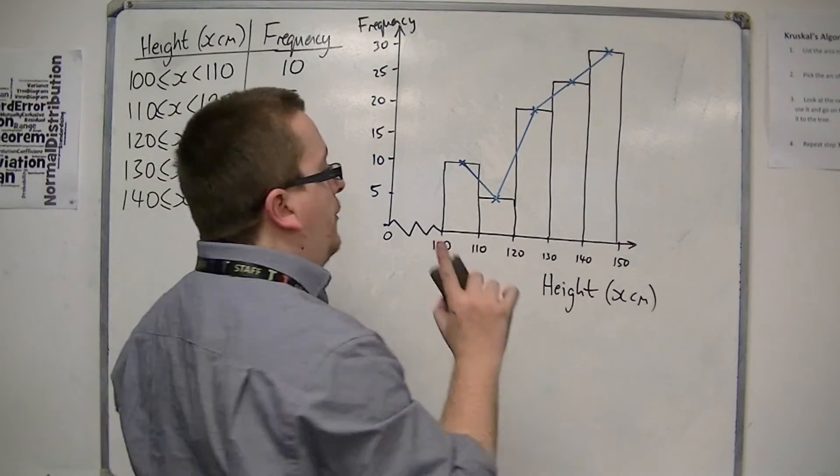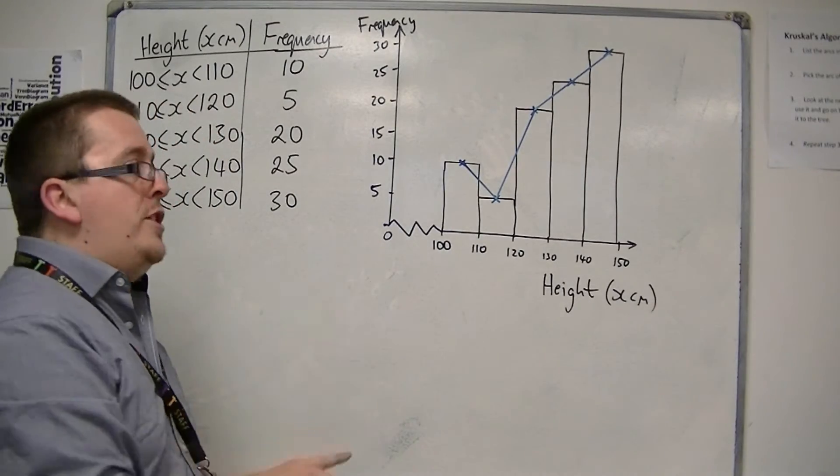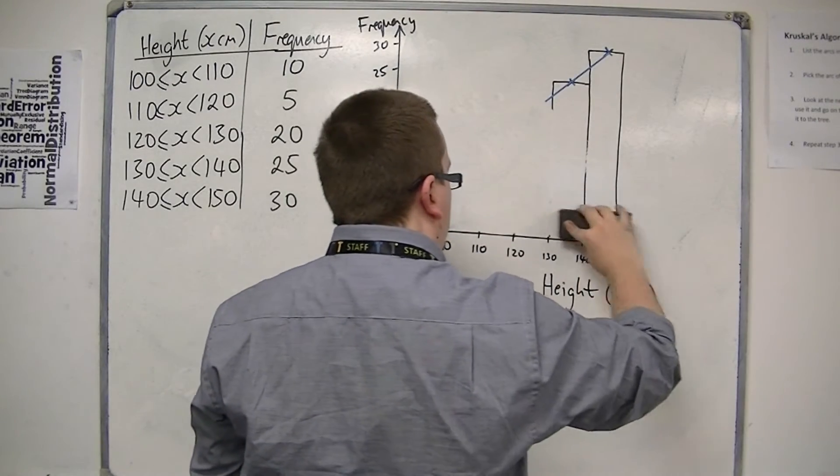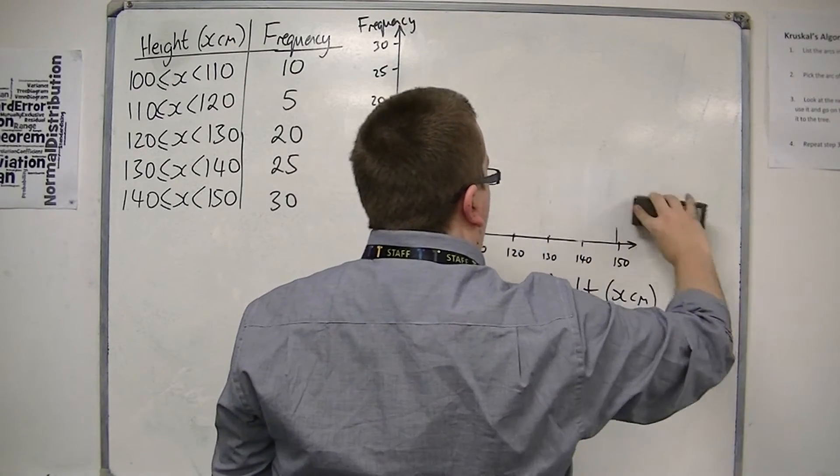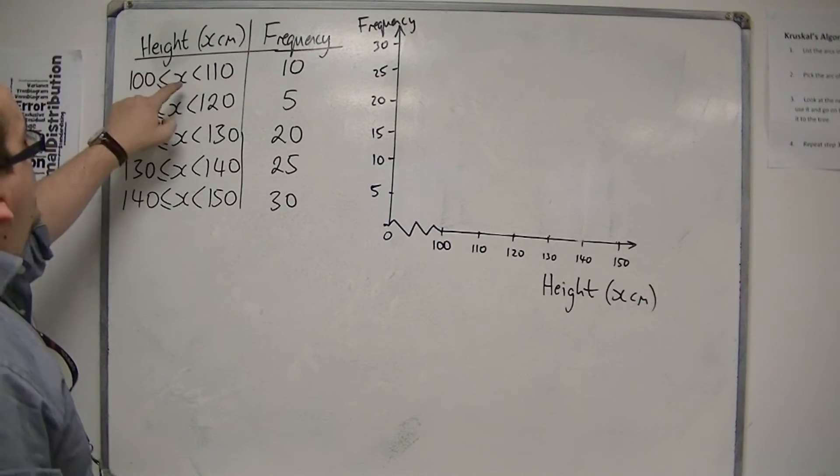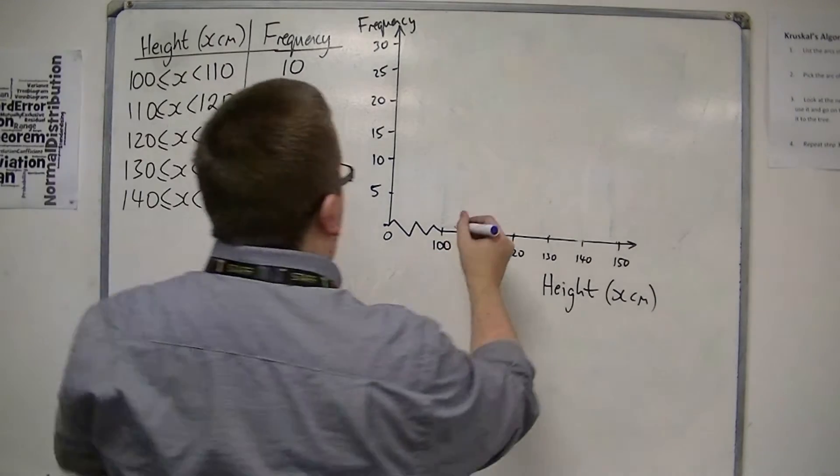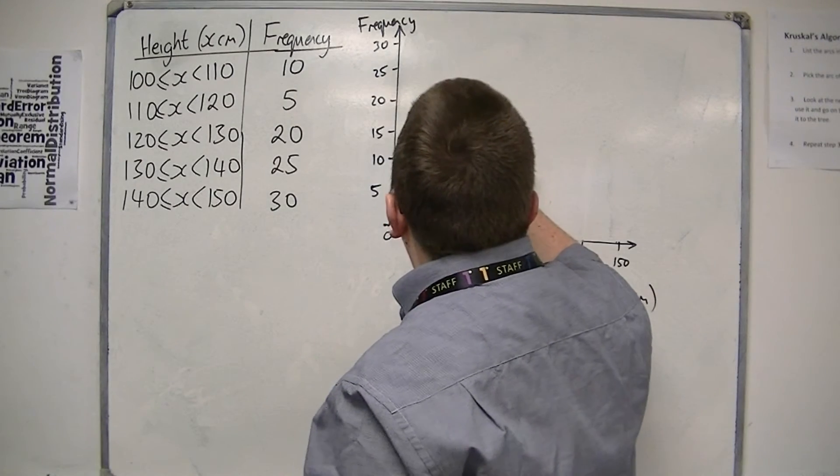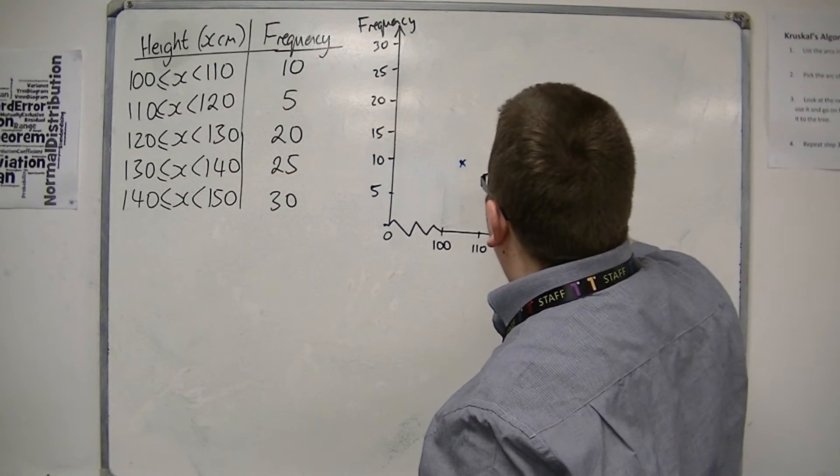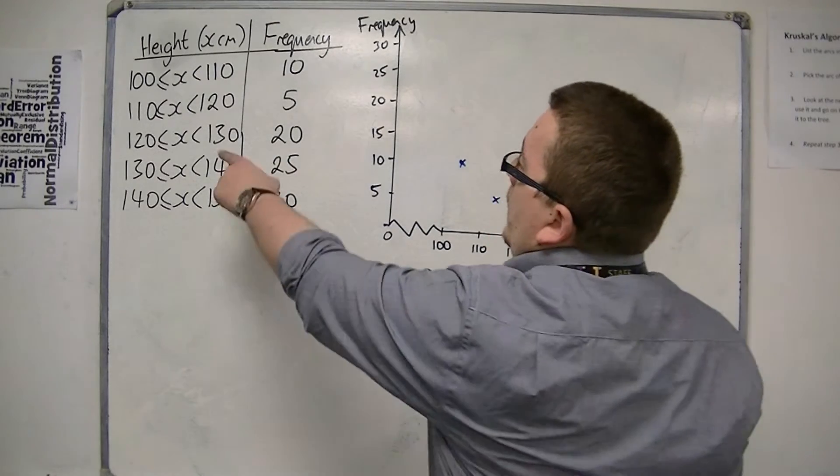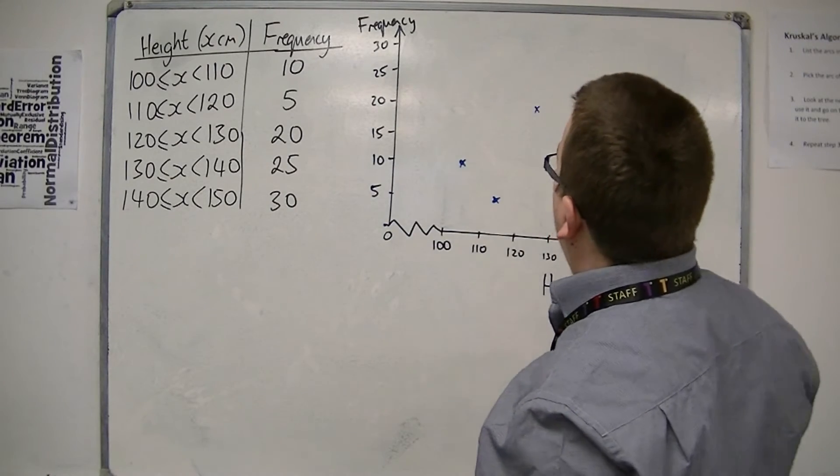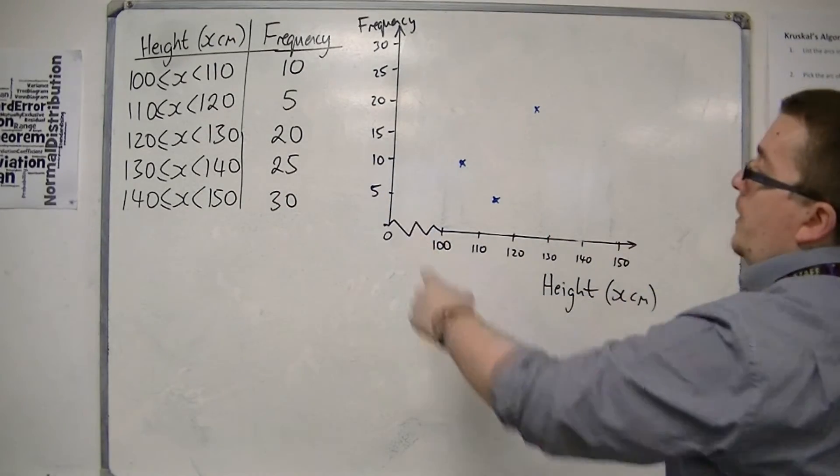If I start from scratch, the midpoint is 105 and you're at 10. So 105 at 10, make a cross. 115 at 5, make a cross. 125 at 20, so it's about there, make a cross. 135 to 25, so 135, 25, make a cross.